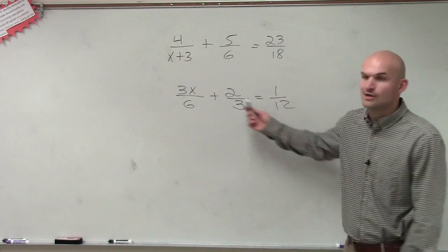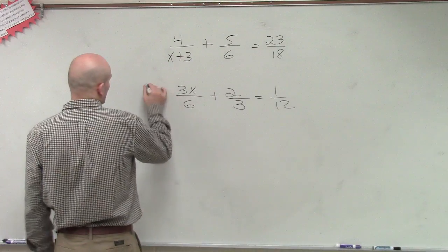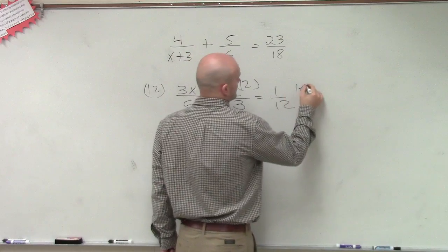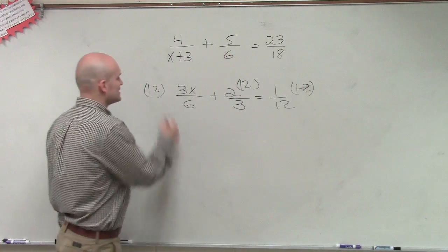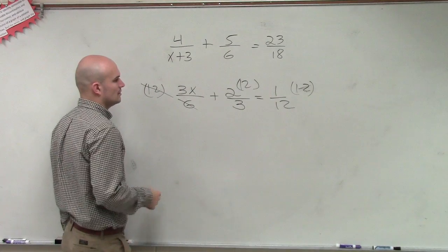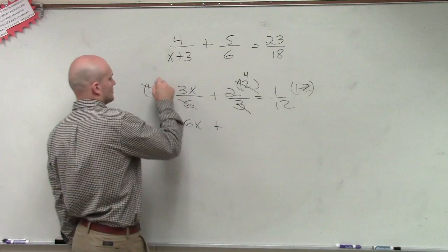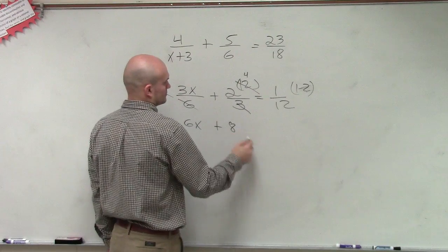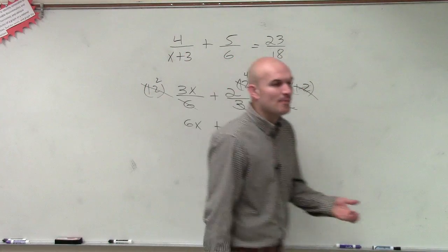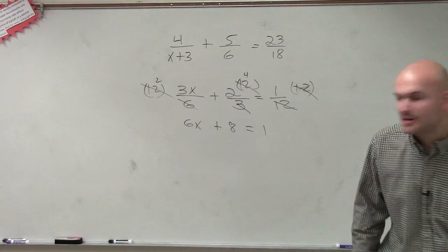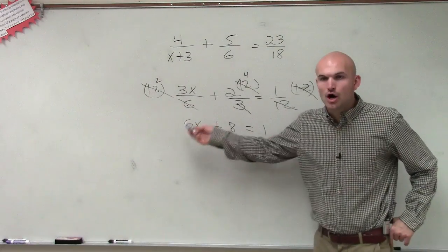But what you could do is say, all right, these all have common denominators. So if I multiplied everything by 12, which would be my LCM, then I could simplify this fraction to give me 6x plus, right? So now, by multiplying by the LCM of your denominators, we can now eliminate all of our fractions, right?